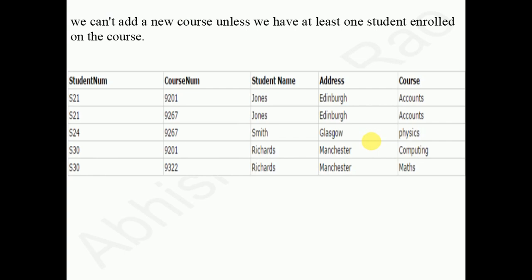In this schema, we cannot add a new course unless we have at least one student enrolled. If there are no students enrolled for a particular course, all the rest of the attributes will be filled with null values. This leads to insertion anomalies. Our main objective is to avoid redundant values and null values in attributes.